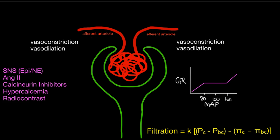There are several things that cause vasoconstriction of the afferent arteriole: the sympathetic nervous system, circulating epinephrine and norepinephrine from trauma, sepsis, or surgery; angiotensin II, which also causes some afferent constriction but preferentially constricts the efferent arteriole; calcineurin inhibitors — tacrolimus and cyclosporine — which cause dose-dependent vasoconstriction of the afferent arteriole; hypercalcemia; and some believe radiocontrast agents for CT scans can also cause vasoconstriction.